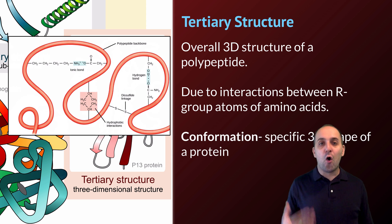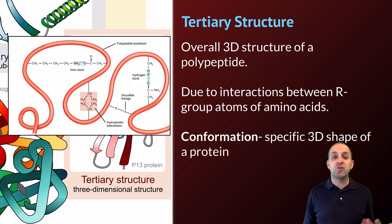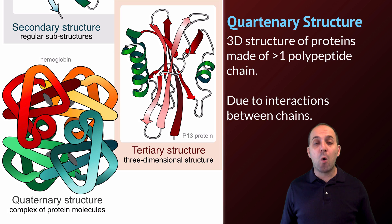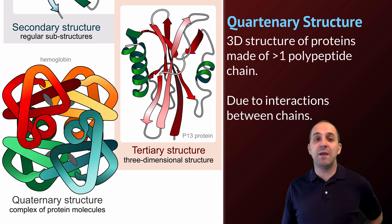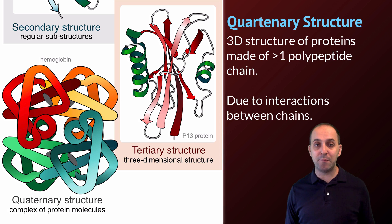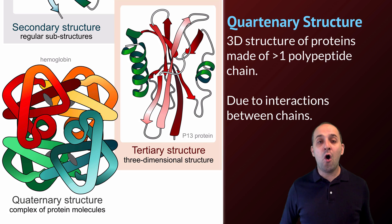The word we use to describe the overall three-dimensional shape of a polypeptide chain is the conformation of the protein. When we talk about the conformation of any structure, we're talking about its specific three-dimensional shape — a term used mostly when discussing protein structure. Quaternary structure is what happens when a particular protein needs to be made out of more than one polypeptide chain. Some proteins function as a single polypeptide chain; others need to combine multiple chains to make the functional unit. The image shows the hemoglobin protein, which is made out of four different polypeptide chains. The interactions that hold those chains together are very similar to the interactions that produce tertiary structure, only now they occur between different chains instead of within one chain.